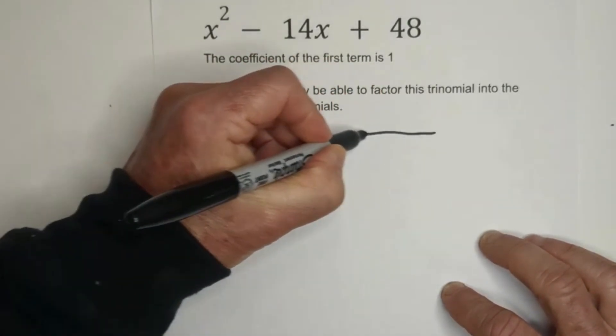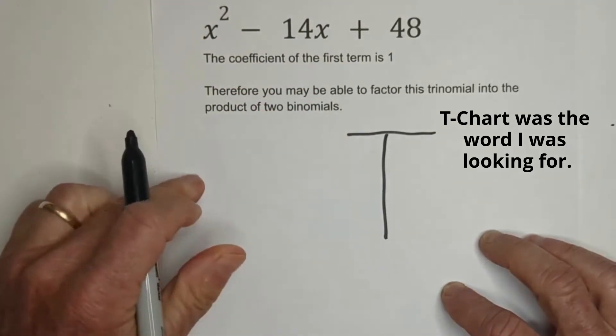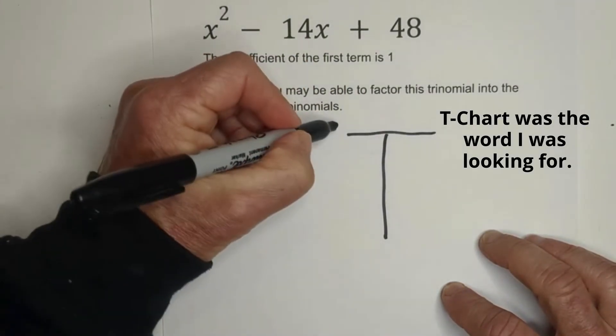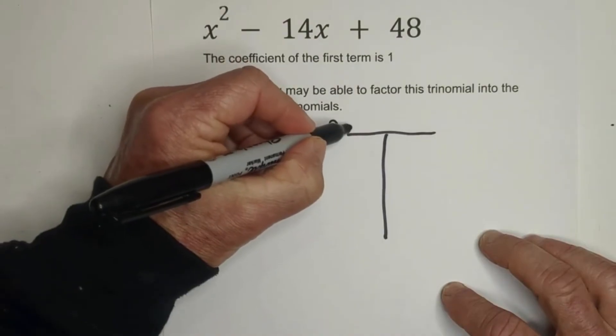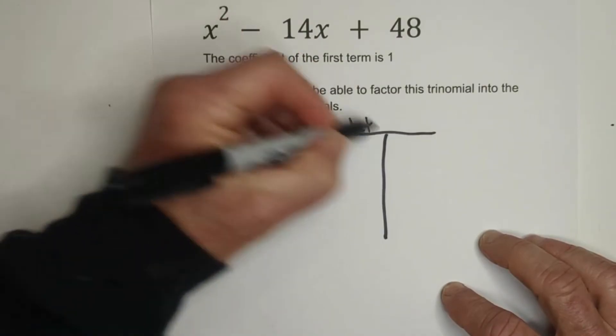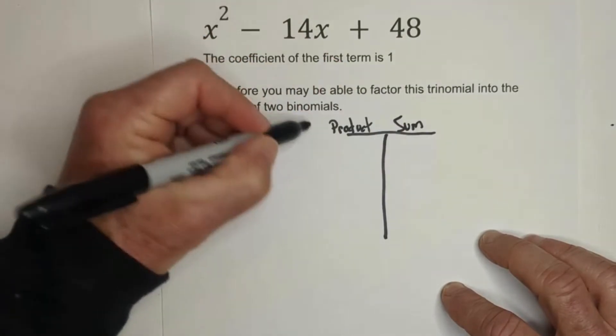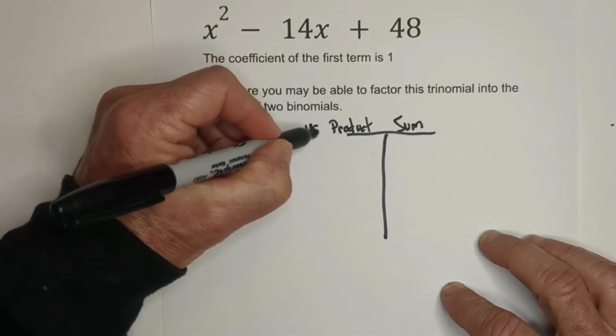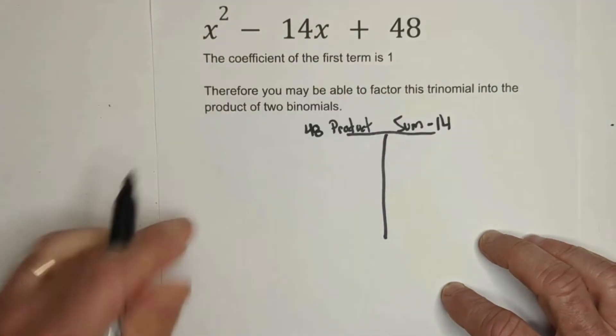I think it may help if you do a little box to keep you organized. And this is product, and this is sum, and we know that the product is 48, and we need a negative 14.